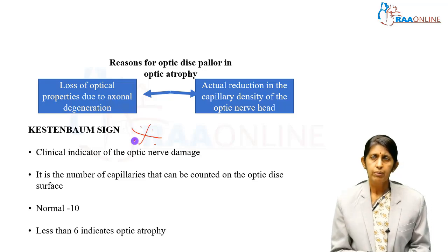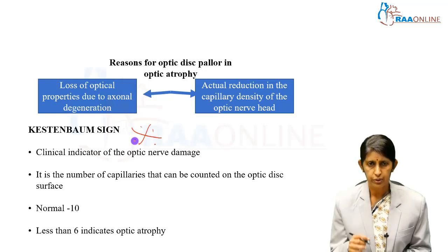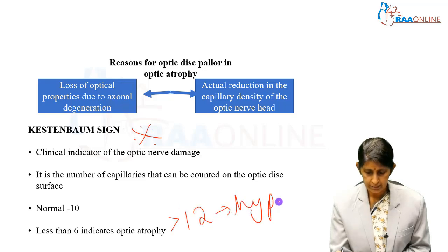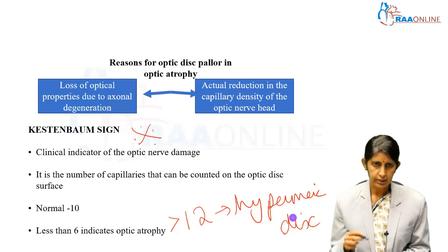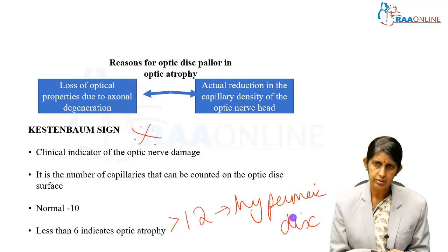To confirm a diagnosis of optic atrophy clinically, the Kestenbaum sign must be documented. Greater than 12 capillaries usually indicates a hyperemic disc, while less than 6 indicates an atrophic disc. The normal figure is approximately 10 blood vessels or capillaries on the optic nerve head.